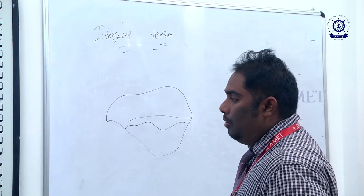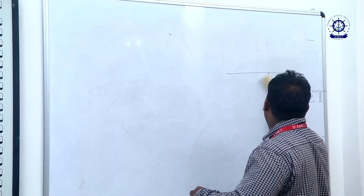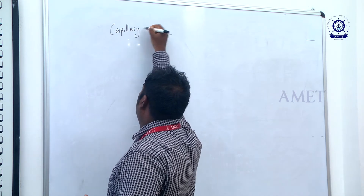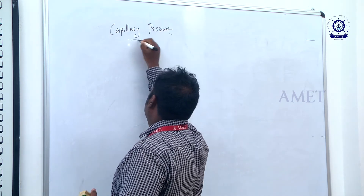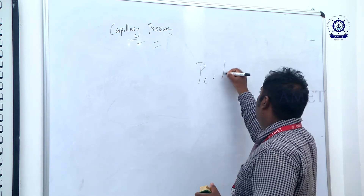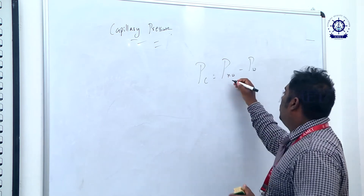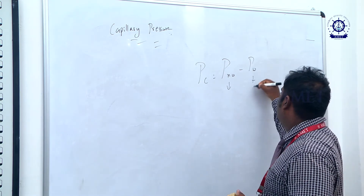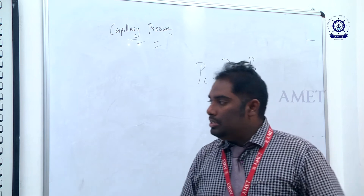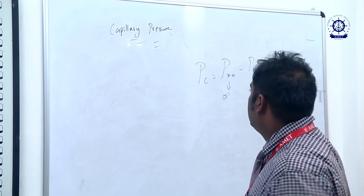The next property of reservoir rock is capillary pressure. Capillary pressure PC is defined as the difference between non-wetting phase pressure and wetting phase pressure. If the wetting phase is water, then the non-wetting phase is oil. The difference between non-wetting phase pressure and wetting phase pressure is the capillary pressure.